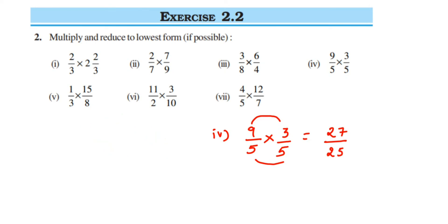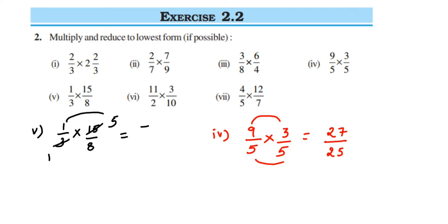Fifth question: 1/3 multiplied by 15/8. Here we can cancel 3 and 15 because 3 is in the denominator and 15 is in the numerator: 3 × 5 = 15. This leaves us with 1 × 5 = 5 in the numerator and 1 × 8 = 8 in the denominator. So the answer is 5/8.